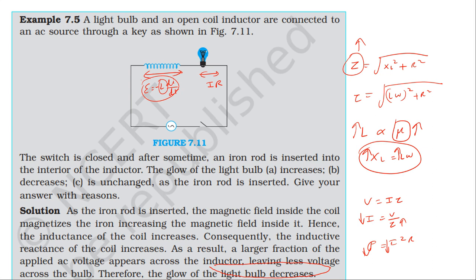That's the answer. If you have increased self-inductance and reactance, current and power of the bulb will decrease.